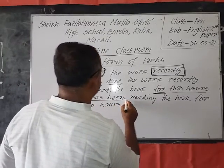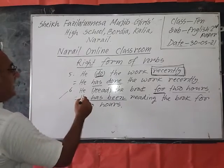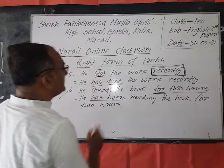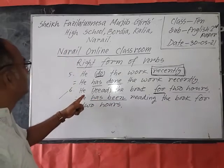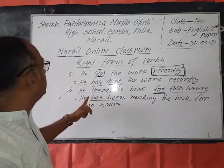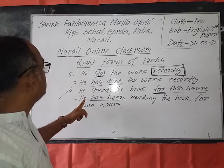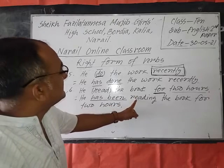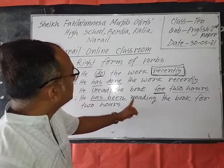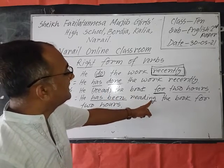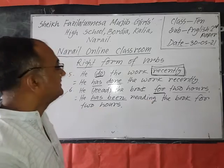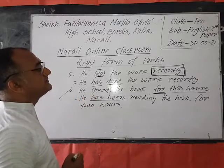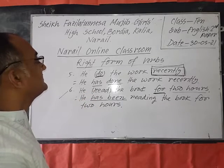Here the structure: after the subject, 'has been' is added, and after the verb, '-ing' is added. This is the present perfect continuous tense.